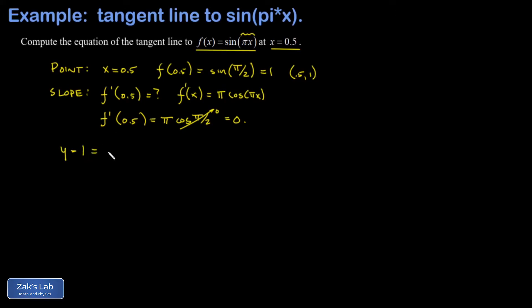equals m, that's the slope, times x minus the known x-coordinate. And everything on the right-hand side vanishes. And the equation of the tangent line is simply y equals 1. That's a horizontal line.